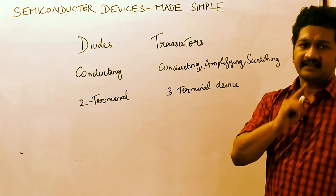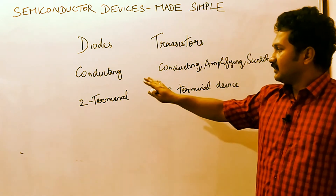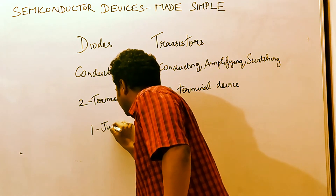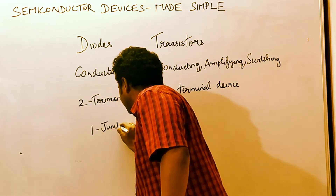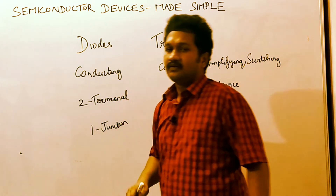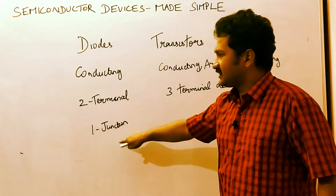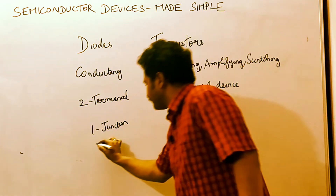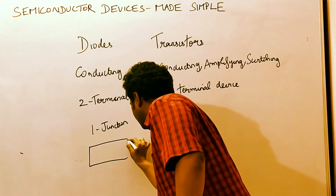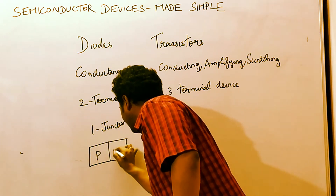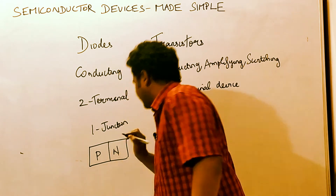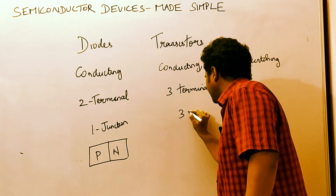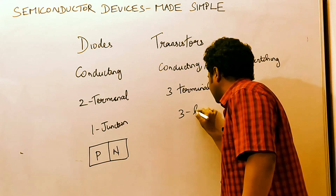Another important difference: a diode has one junction and two layers. When I say two layers, what are the two layers? A P layer and an N layer. The transistor, on the other hand, has three layers.